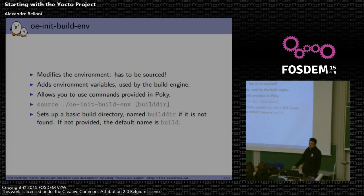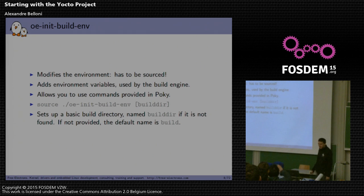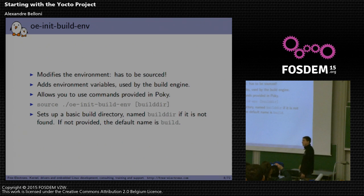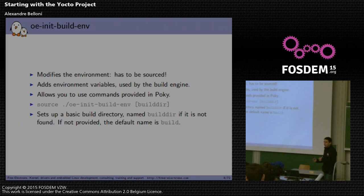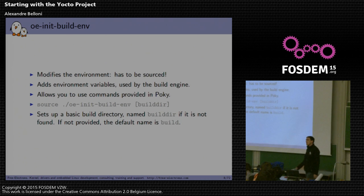The oe-init-build-env script modifies your environment, which is why you have to source it rather than execute it — executing it would run in a subshell and your environment changes would be lost. It allows you to use commands provided by Poky, mainly BitBake but also a set of scripts. It sets up a basic build directory — by default called 'build', but you can name it whatever you want. If you want multiple builds with different configurations from the same sources, you can have multiple different build directories.